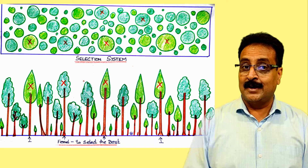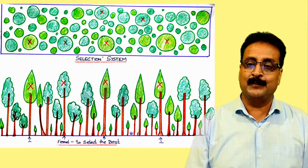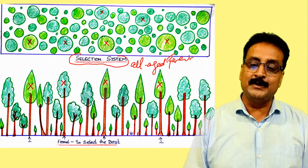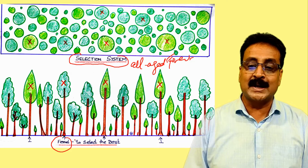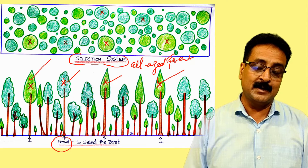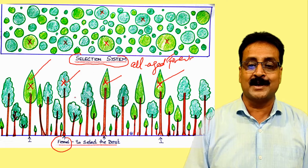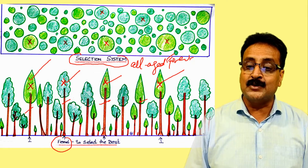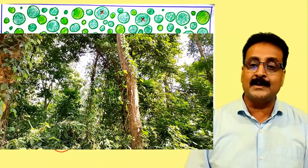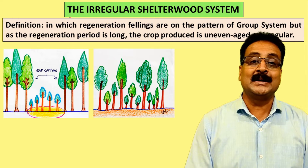Now let me explain the selection system, which I'll cover in coming lectures. The selection system is an all-aged forest. There is a German word 'Femal' — meaning to select the best. In Femal Slag, we identify trees of exploitable diameter and, rather than waiting for them to die, we harvest them when fully matured. We select and fell exploitable-diameter trees throughout the all-aged forest.